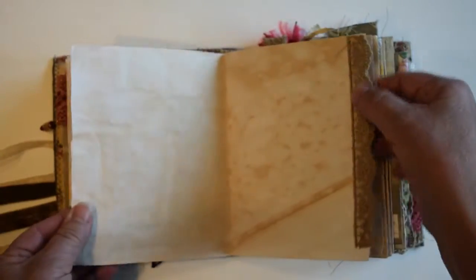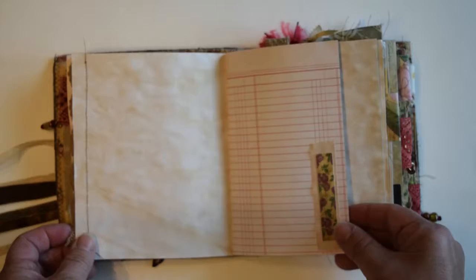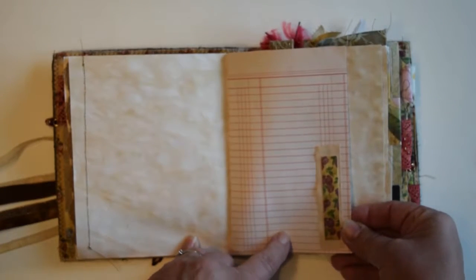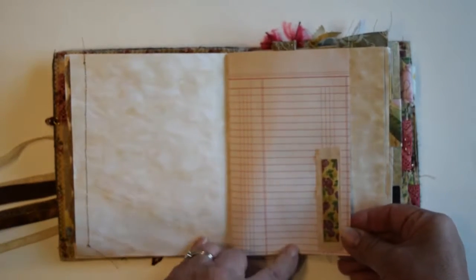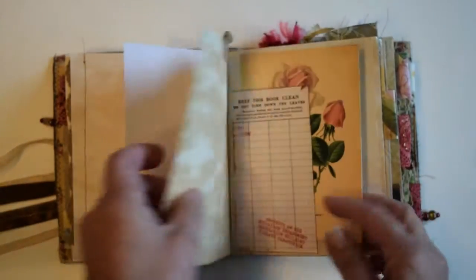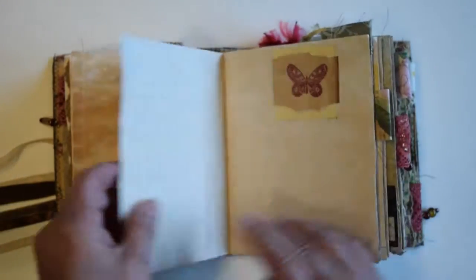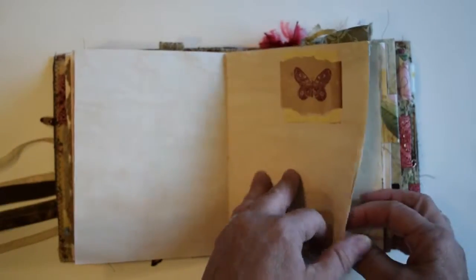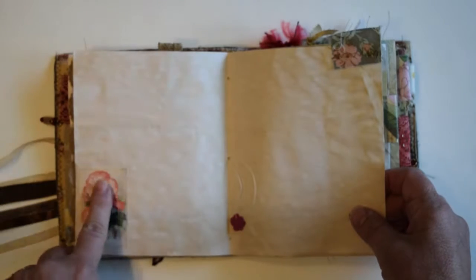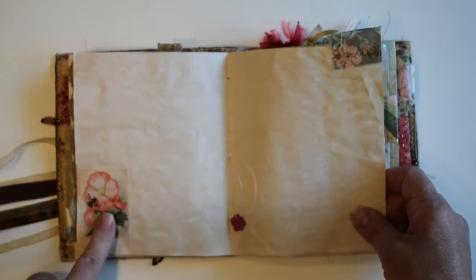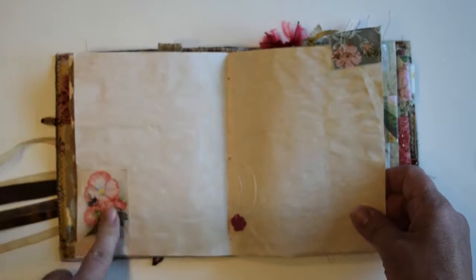There's some lace sewn on the edge, some patterned paper or ledger paper here. It's a little collaging paper collage. There's a lace tab. It's a little tuck spot with ephemera in there, a little collaging, stamping, a little image that I glued on.